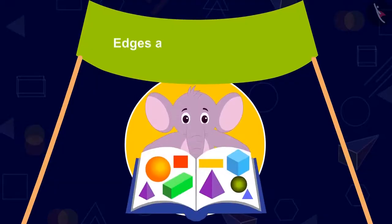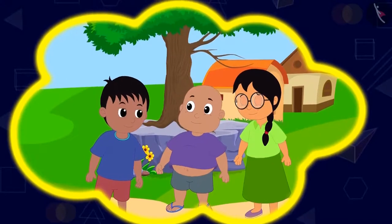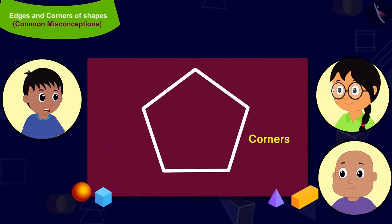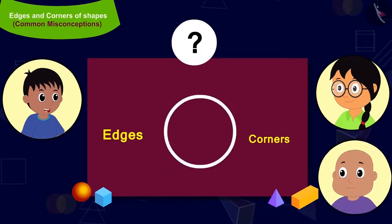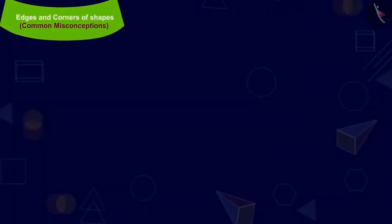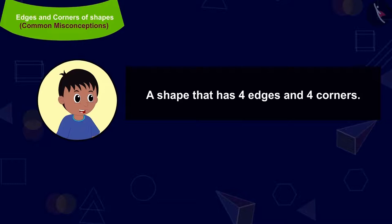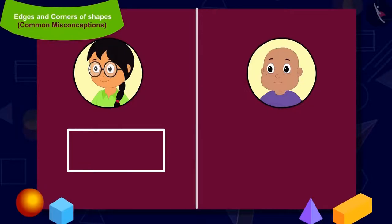In this video we will see common mistakes related to the edges and corners of shapes. Raju will tell Meenu and Babloo the number of edges and corners, and they will have to make a shape according to the question. Raju's first question is: make a shape which has four edges and four corners. Meenu and Babloo both start making their shapes — Meenu made one shape and Babloo made another.